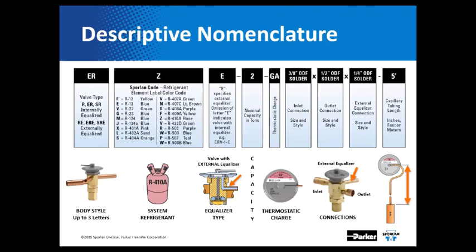This is a snapshot of our nomenclature — you can see it is all segmented and we're going to talk about all of these individually today. The first portion of our nomenclature is the valve type, also referred to as the body type; this could be one up to three letters long. The second segment is our refrigerant code — all the common refrigerants have a letter of the alphabet associated to them, and different colors as well. Following that is the equalizer: if there is an E present, that means it is externally equalized; without an E, that means it's internally equalized.